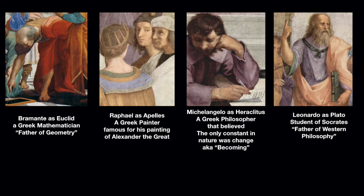Next we have Raphael, who paints himself as Apelles — the greatest of the Greek painters, responsible for a painting of Alexander the Great. Raphael is doing a classic thing many artists do: if the artist puts themselves in the painting, they'll be looking directly at you — like saying 'I see you looking at my artwork.' This becomes a fun game at a museum: if you see a figure looking back at you, that might be the actual artist.